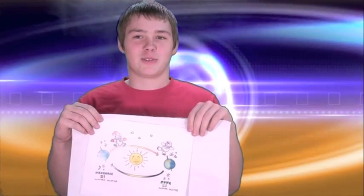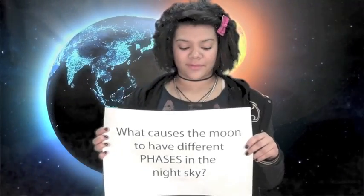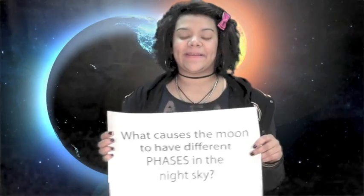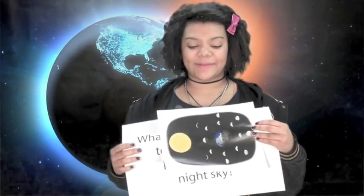What is a solstice? There are two solstices: a winter solstice and a summer solstice. The summer solstice occurs June 21st and the winter solstice occurs December 21st. These happen when the sun is furthest away from the earth. What is an equinox? An equinox is when there are 12 hours at night and 12 hours in the day. What causes the moon to have different phases in the night sky? The light from the sun casts on one side of the moon and we see that one side from different viewpoints based on where it is in its orbit.